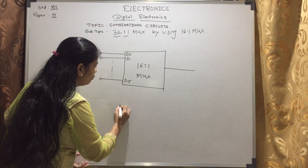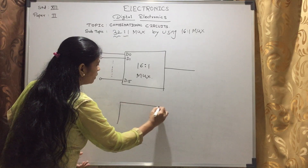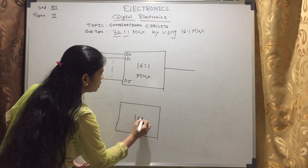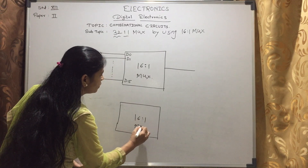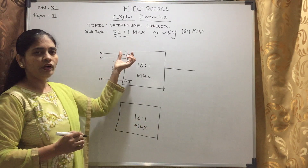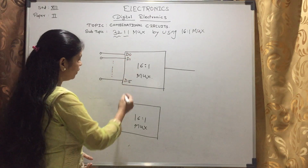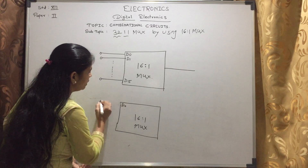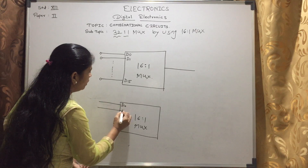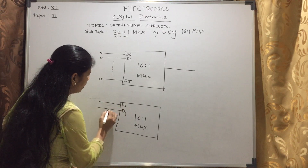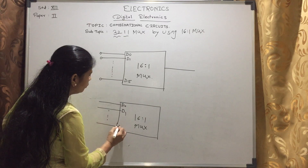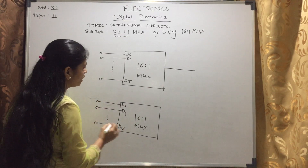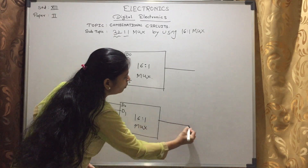Again, we need a second 16-to-1 multiplexer. This is the second 16-to-1 MUX. Same as before, it has 16 inputs: D0, D1, and so on up to D15. These are the two multiplexers, and the second one also has 1 output.